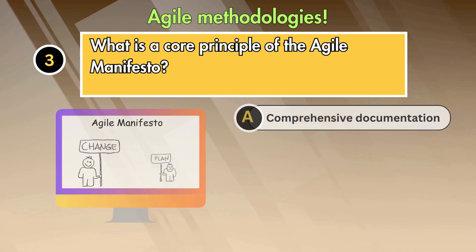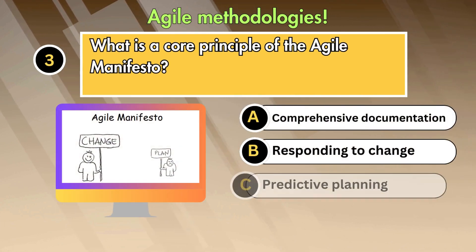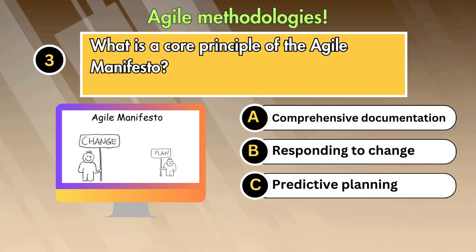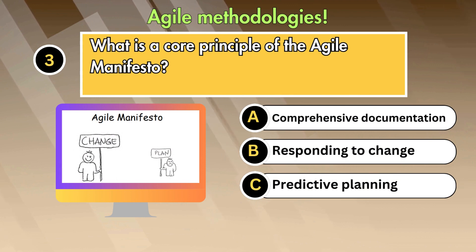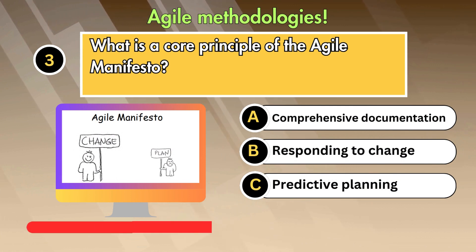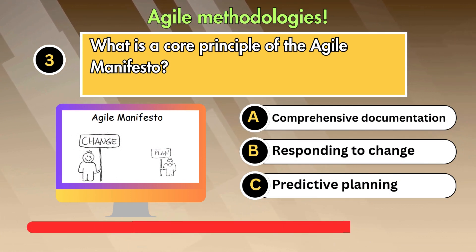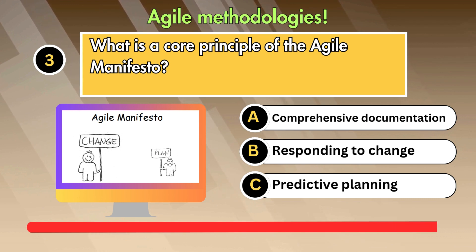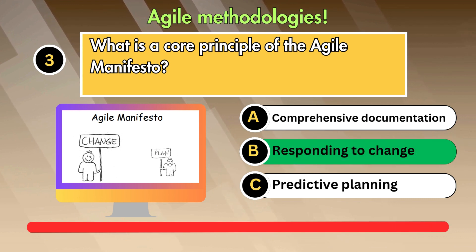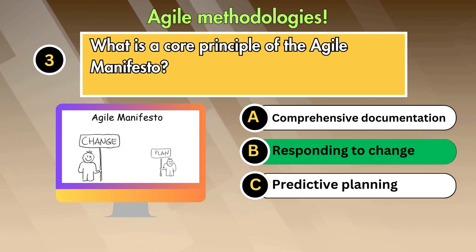Question 3: What is a core principle of the Agile Manifesto? Option 1: Comprehensive documentation. Option 2: Responding to change. Option 3: Predictive planning. Answer is: Responding to change.